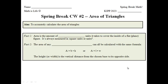Our facts are two facts you should have seen before. Area is the amount of blank units it takes to cover the inside of a flat or plain figure. It is always measured in square units or units squared. Go ahead and call out what word should go in that blank. If you said 'square,' you are correct. Fact Number 2: the area of any blank can all be calculated with the same formula — area equals base times height, or area equals length times width. If you said 'parallelogram,' you are right.